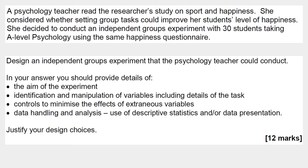So this is the question. Don't get thrown off by the first sentence — the question follows on from a couple of previous questions in the 2019 paper. Basically, you're being asked to design an independent groups study on the impact of group work on happiness levels. In a sec I'm going to go through the important bits of information in the question, and then we'll look through some of the key things to consider before you start writing an answer. If you want to have a go at the question before I do any of that, then pause the video now and give it a go.